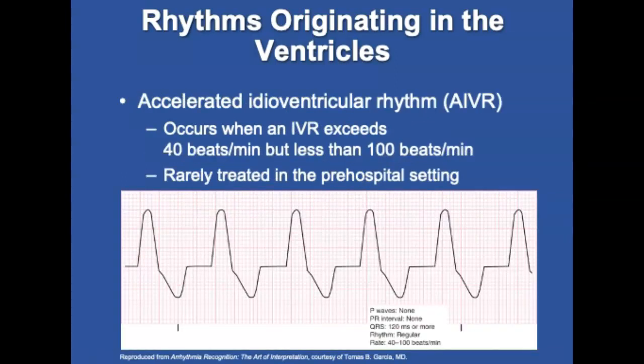Accelerated idioventricular rhythm occurs when the idioventricular rate exceeds 40 beats but remains less than 100 per minute. The rhythm is regular, P waves are absent, and the QRS complex is 0.12 seconds or more. Accelerated idioventricular rhythm may be observed during the first 12 hours of an AMI or after reperfusion therapy. Do not suppress these rhythms with ventricular antidysrhythmic agents.